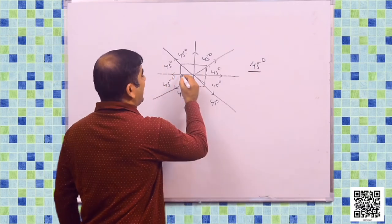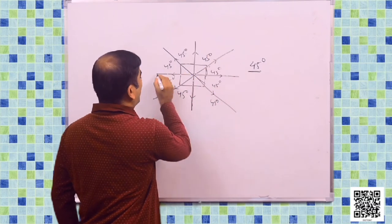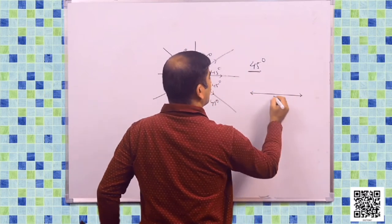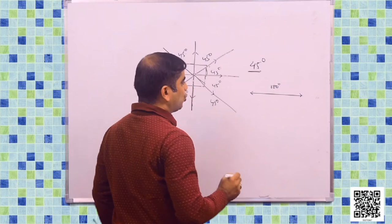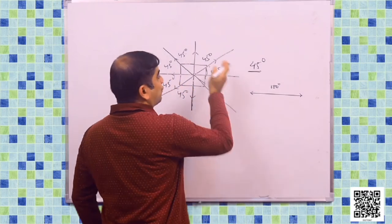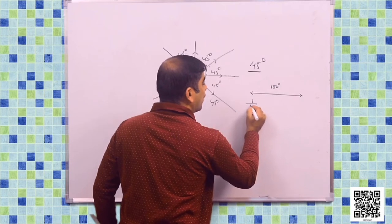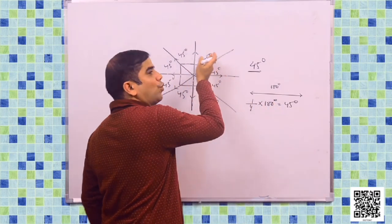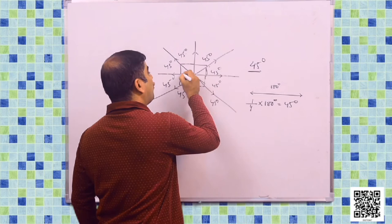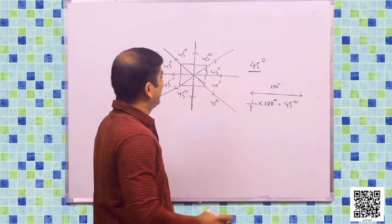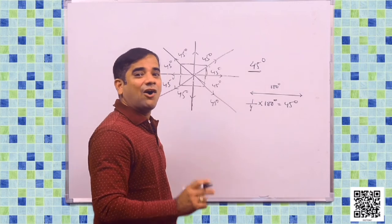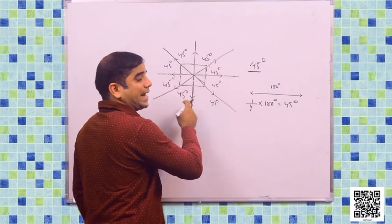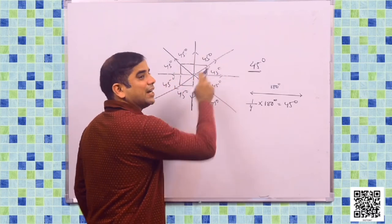If I divide 360 degrees into two parts, as we know a straight line has 180 degrees of angle. So when I turn 45 degrees, that means it is one-fourth of the angle. So I can say that this is a one-fourth turn of a full 180 degrees. So this is maintaining a pattern of a 45-degree turn and it goes from here with a pattern of 45-degree turns and comes back up to here.